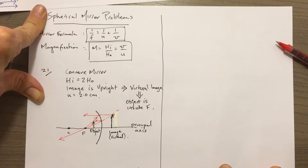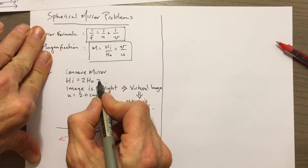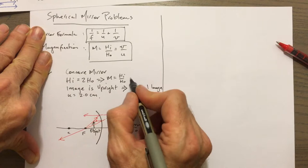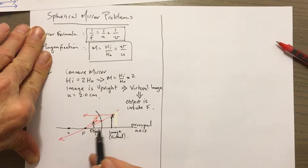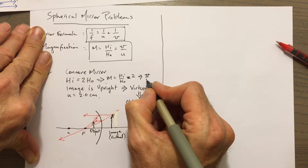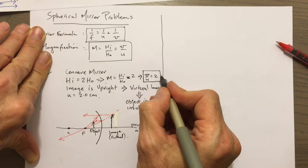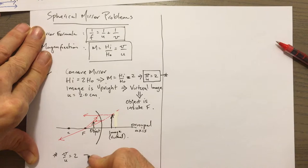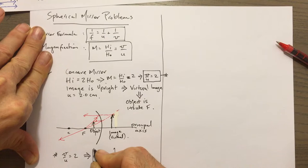Knowing the height of the image is twice the height of the object tells us about magnification. The magnification, which is H_i over H_o, equals 2. That also implies V over U equals 2, so V equals 2U.